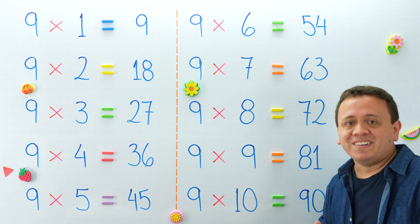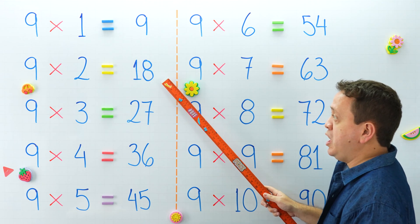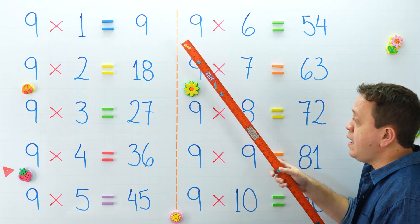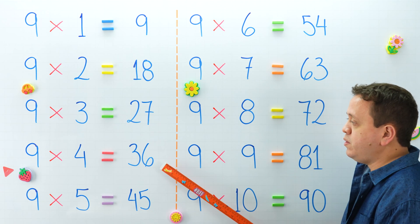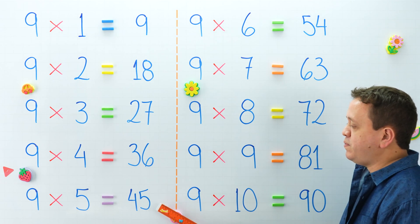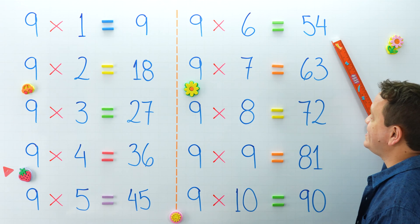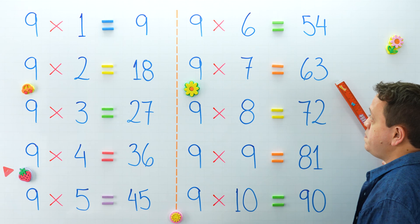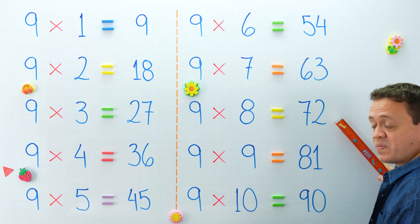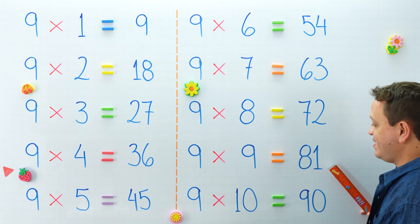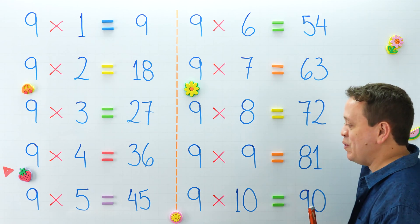Let's check our products again, but this time you're going to help me. What is 9 times 1? 9 times 2 equals? 9 times 3 equals? What about 9 times 4? 9 times 5 equals? 9 times 6 is equal to? The next — 9 times 7? And 9 times 8 equals? 9 times 9 equals? And 9 times 10 is equal to? Yes, we finish with this table.